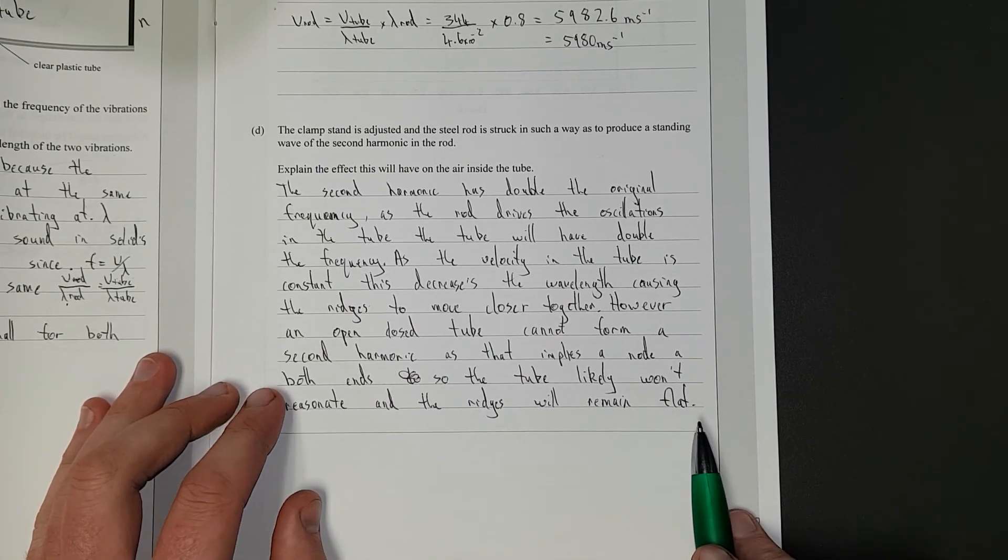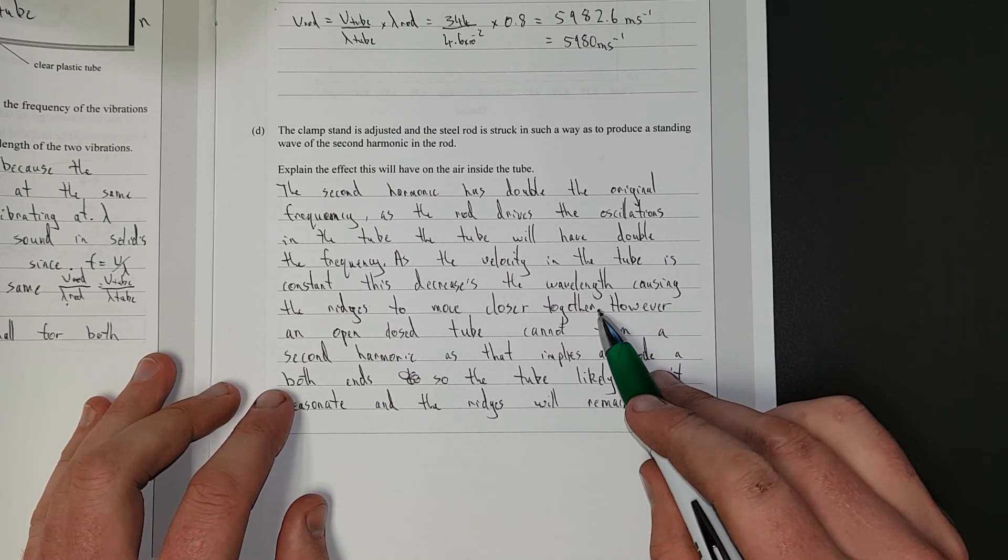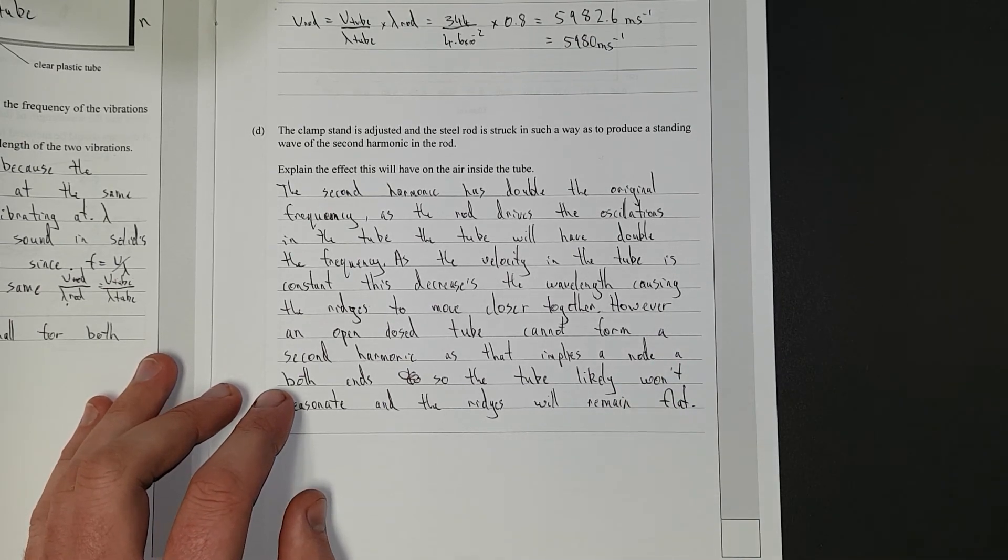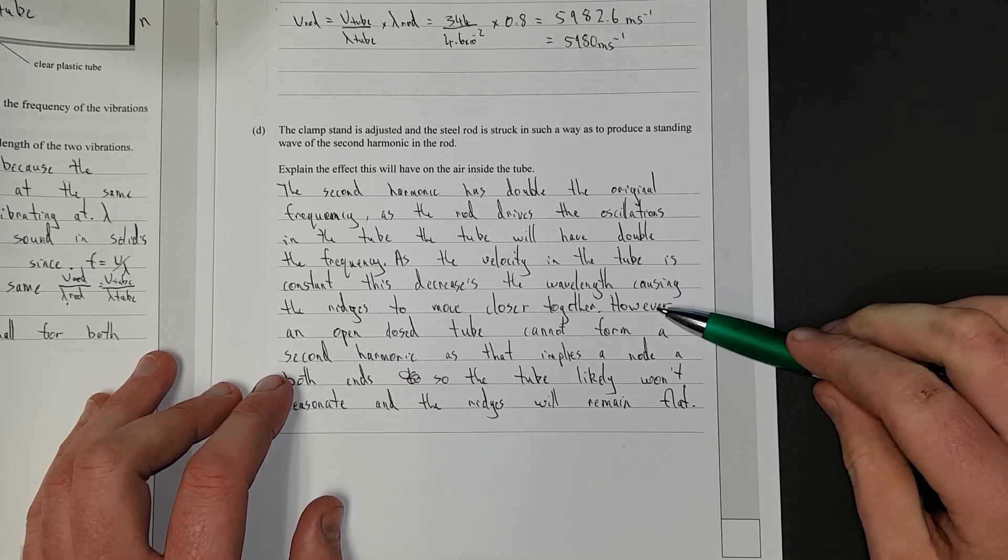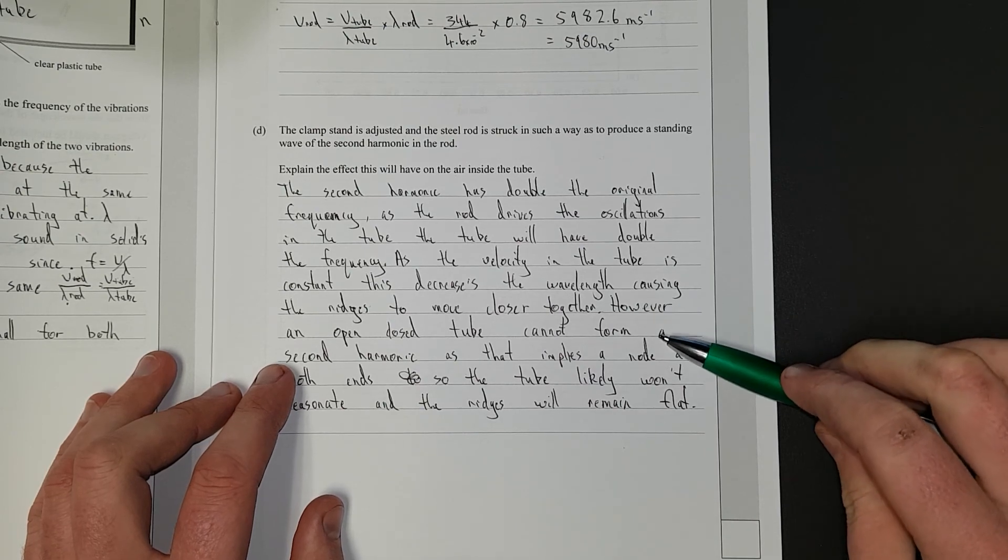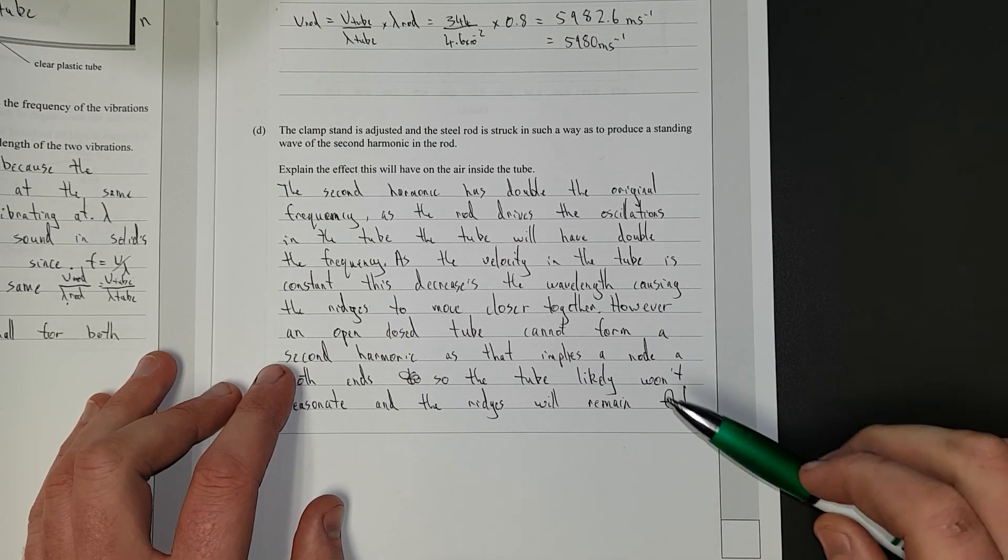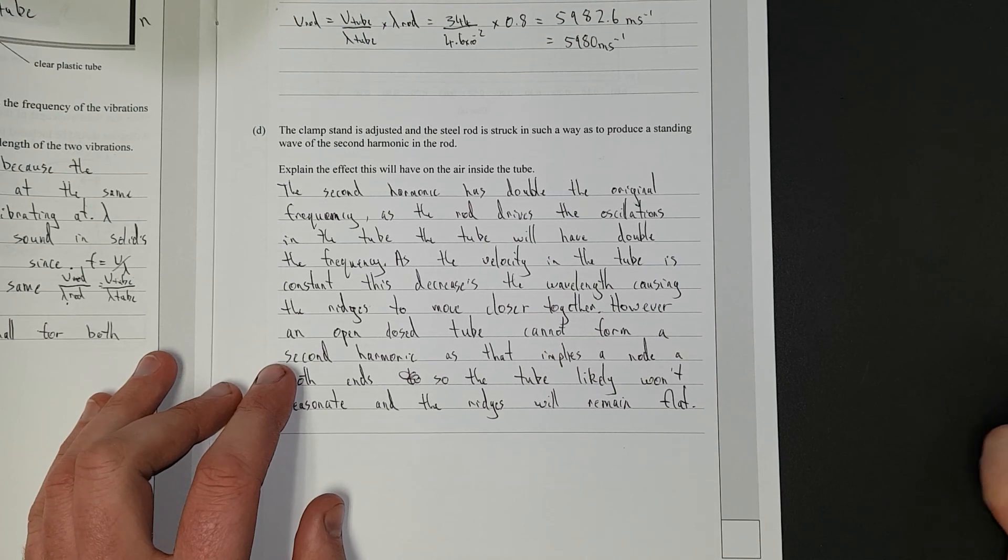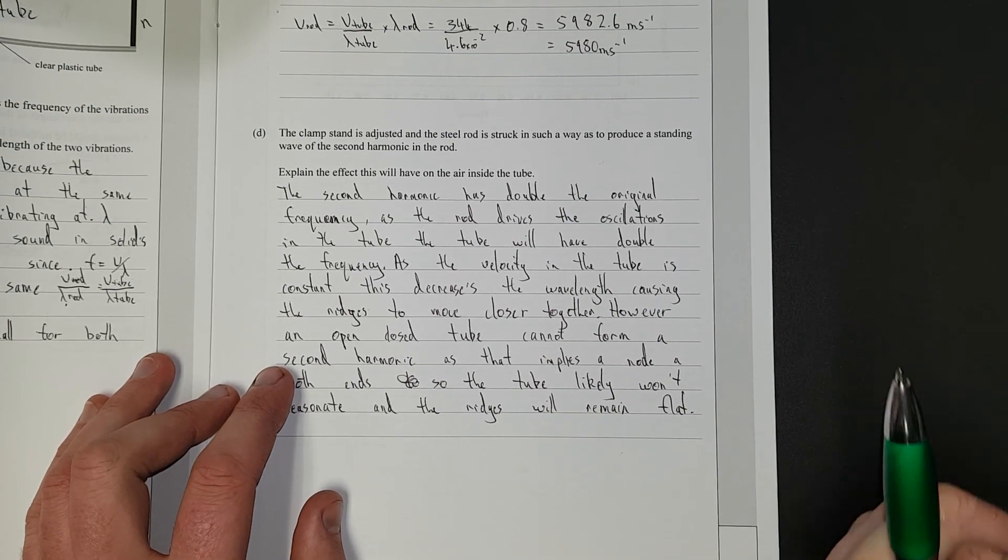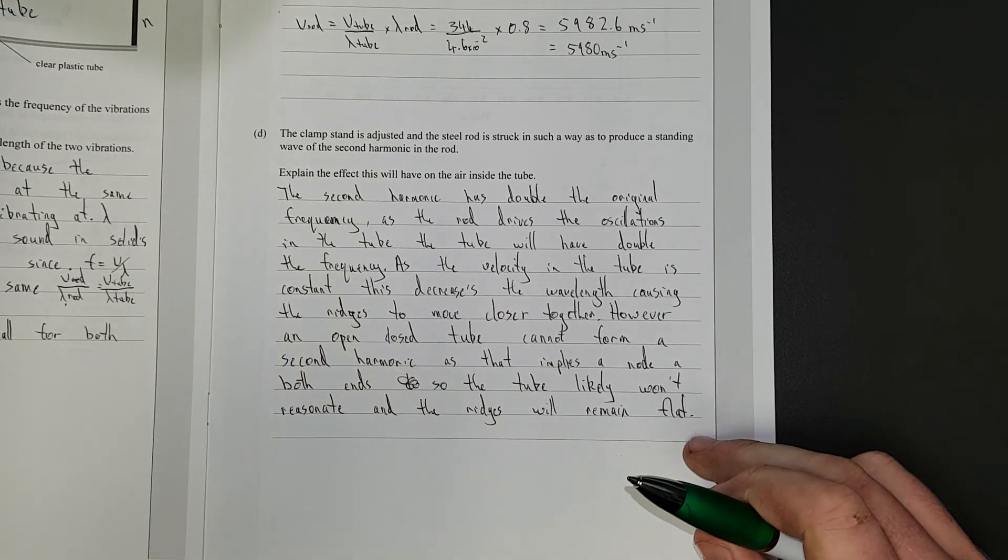So, cannot form a second harmonic as that implies a node at both ends. So the tube likely won't resonate and the ridges will remain flat. You get the excellence if you get up to here. The rest of this stuff is just me having a sort of a rant about the question structure. If you just said the tube won't form a second harmonic, there won't be any sort of resonance, nothing will happen to the air inside the tube, you didn't really get the mark unless you're really specific about what happens.